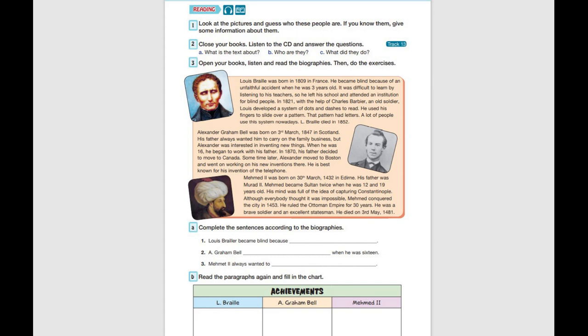Louis Braille was born in 1809 in France. He became blind because of an unfortunate accident when he was three years old. It was difficult to learn by listening to his teachers, so he left his school and attended an institution for blind people. In 1821, with the help of Charles Barbier, an old soldier...